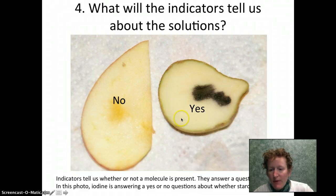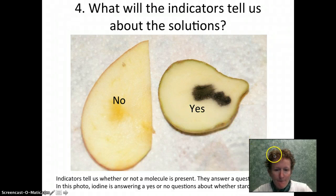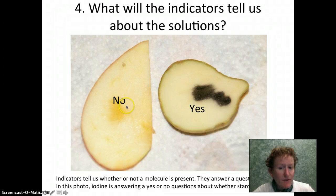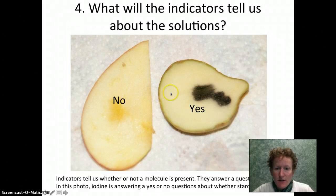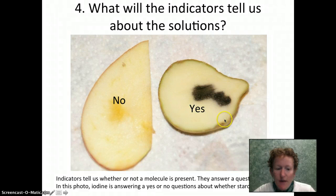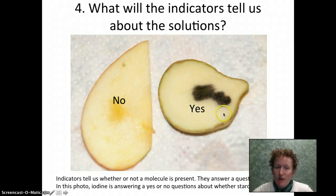An indicator is a material that changes color in the presence of a particular compound. In the starchy water, iodine changed color because it's indicating there's some starch in the pasta water. Indicators answer a yes or no question. Iodine on an apple says there's no starch - there are carbohydrates but not in the form of starch. Iodine on a piece of potato says yes, there is starch. So indicators answer a yes or no question about whether a molecule is present.